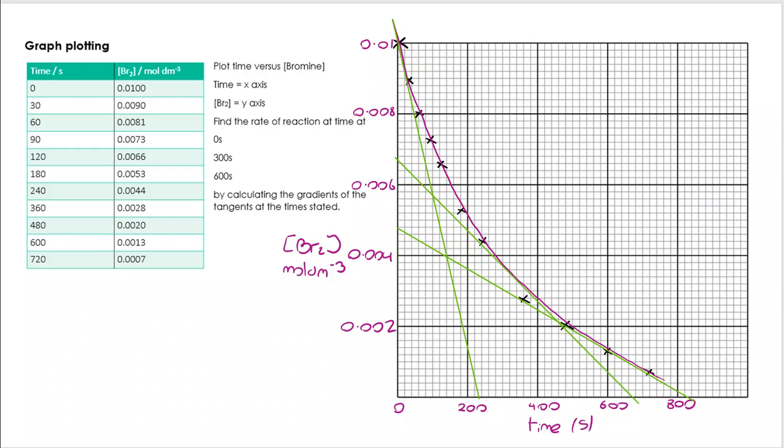Remember, that's changing y over changing x. Changing y is concentration. Changing x is time. So we're doing concentration over time. The gradient is going to be the rate of reaction. So at 0 seconds, you can see that it comes across to 230. It's 0.01 over 230. I get 4.35 by 10 to the minus 5 moles per decimetre cubed per second.